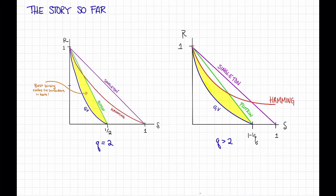So to summarize, here is what we know so far about the best possible trade-offs between rate and distance. We have seen impossibility results, the Singleton bound, the Hamming bound, and now the Plotkin bound, which limit what trade-offs between rate and distance are possible. And we've also seen the GV bound, a possibility result.